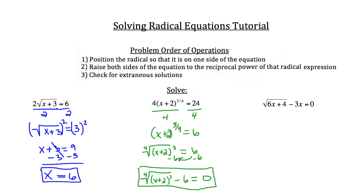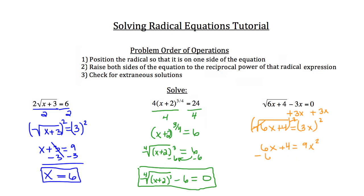Lastly, let's look at the problem on the right. The first thing to do is add 3x to both sides of the equation, giving us the square root of 6x plus 4 equals 3x. To eliminate the square root, we square both sides. That cancels the square root on the left, leaving 6x plus 4, while on the right 3x squared gives 9x squared. Then we subtract 6x and subtract 4 from both sides, getting 0 on the left and 9x squared minus 6x minus 4 on the right.